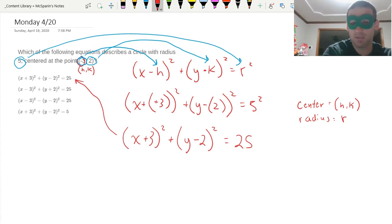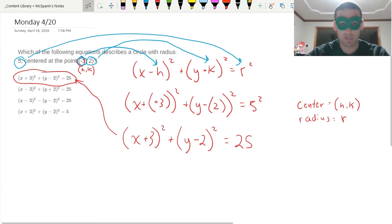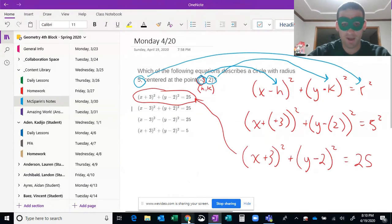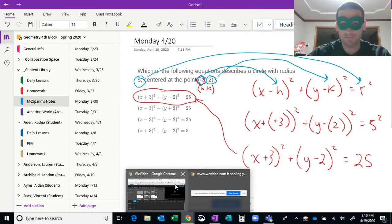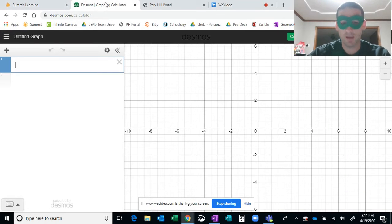That one there: X plus 3, Y minus 2, and 25. Now that's a pretty quick process. I want to show you something real quick if you want to check yourself just to make double sure. What I actually have here is I've got Desmos pulled up. Now on Desmos, what I'm going to do is...